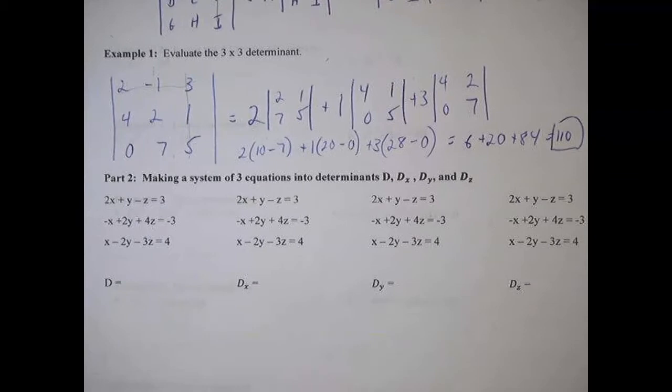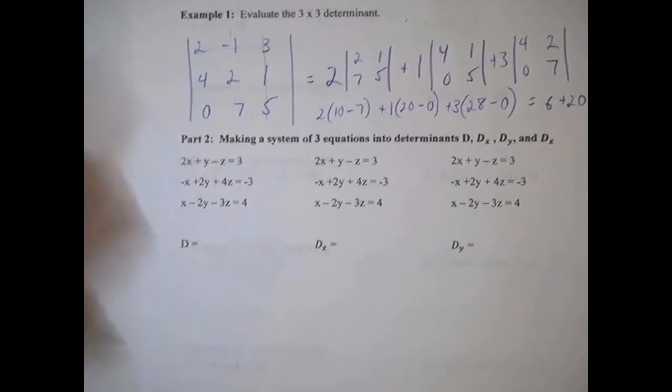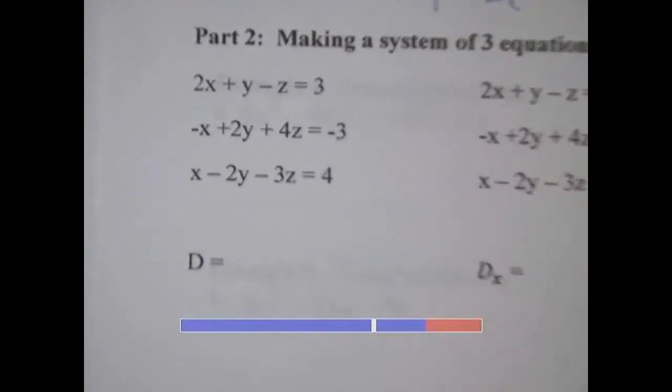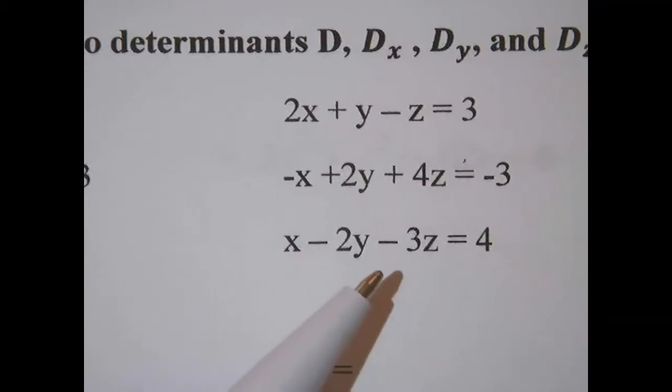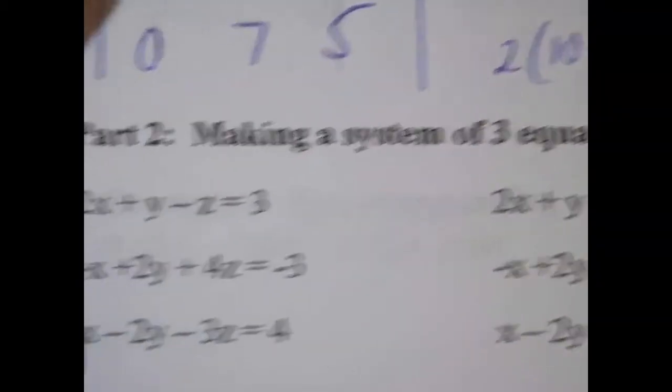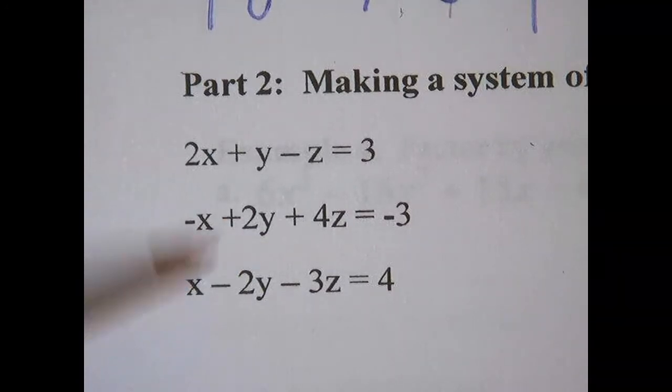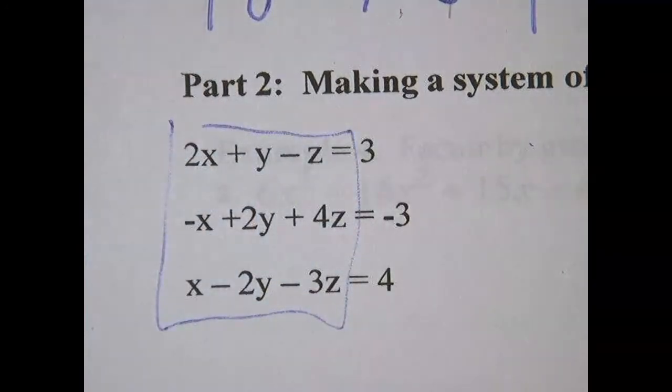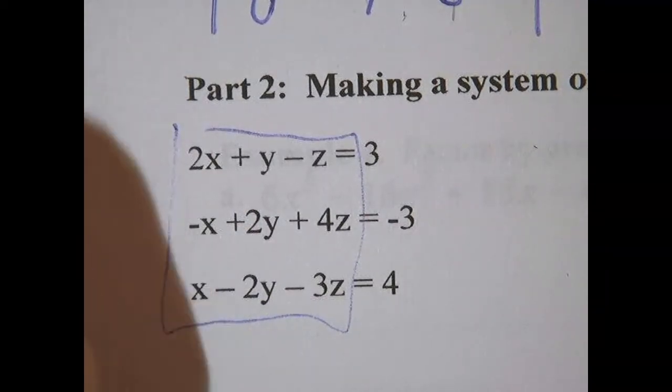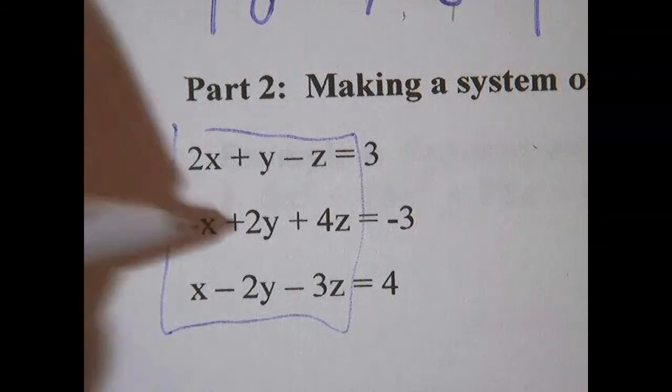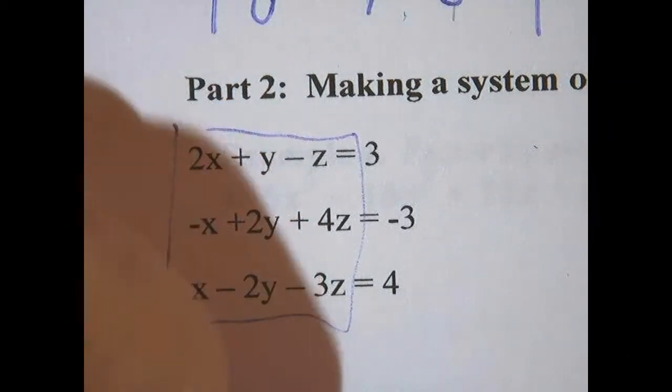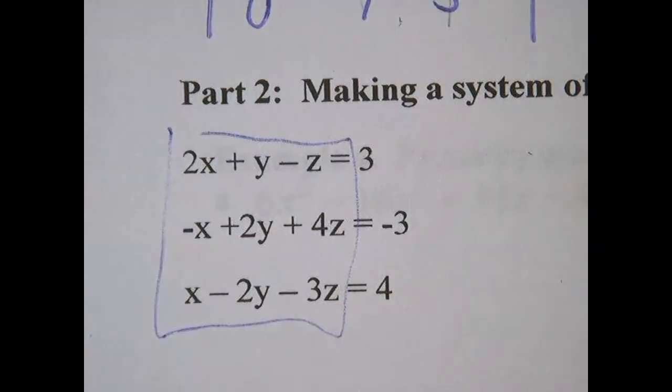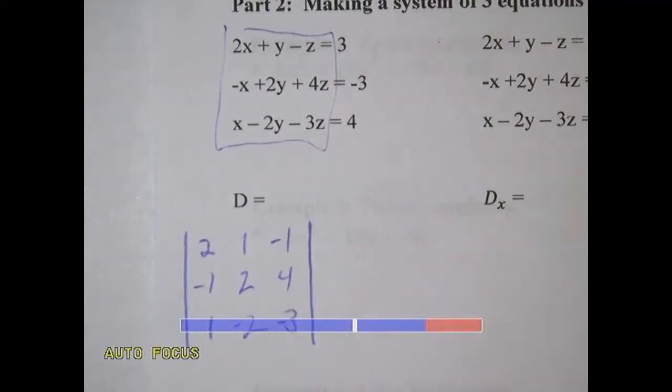Now we're going to create 3 by 3 determinants out of a system of equations. I just took the same system of equations right here. This is 3 equations with 3 unknowns. These can be a pain if you don't have a systematic way of doing it. I just rewrote it 3, it's exactly the same system. I rewrote it 4 times so we can see the 4 determinants. So the D determinant just takes all of these. We're going to get the determinant of 2, negative 1, 1, negative 1, 2, 4, negative 3.